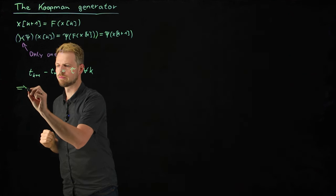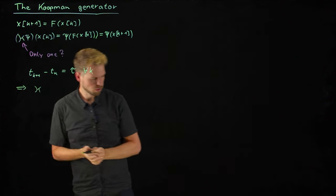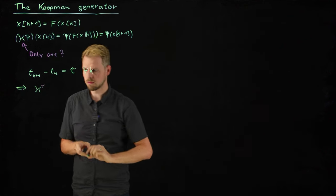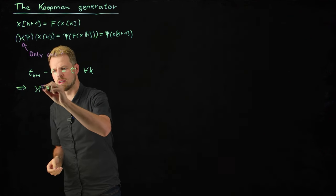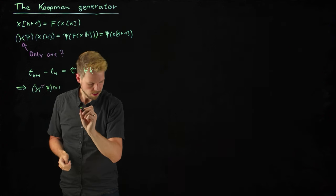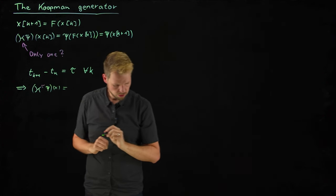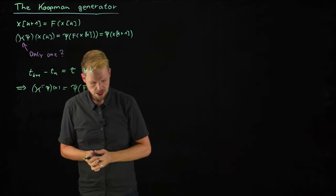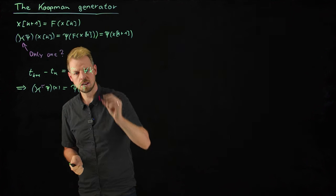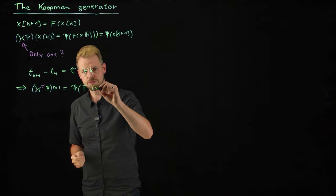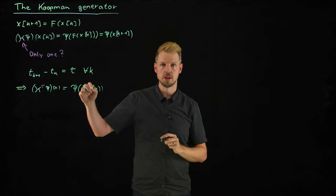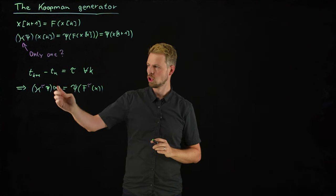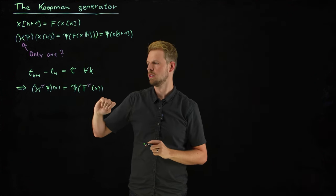So what we really have is a Koopman operator that is parameterized by this time step. So K_tau of psi of x is psi of f_tau of x, which means that for every time step that we consider, there is one Koopman operator that gives us the evolution of the associated observable function with that similar time step.